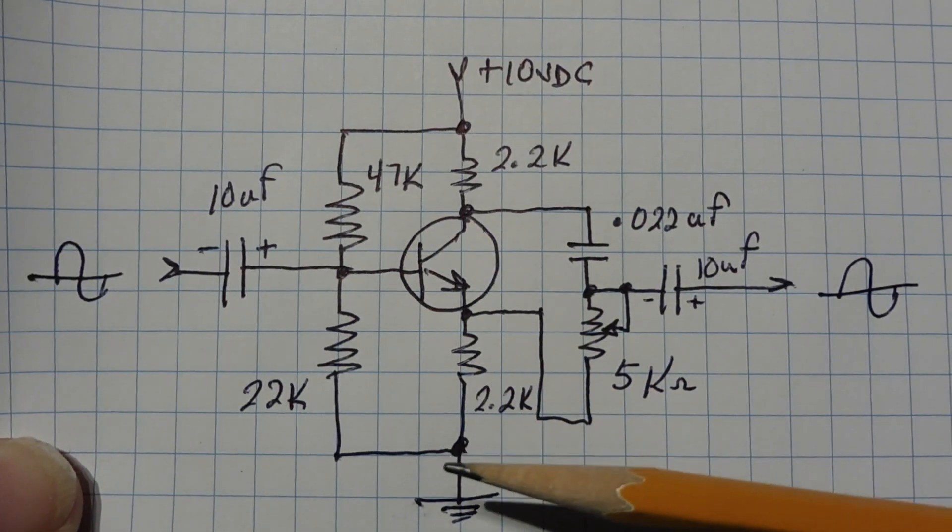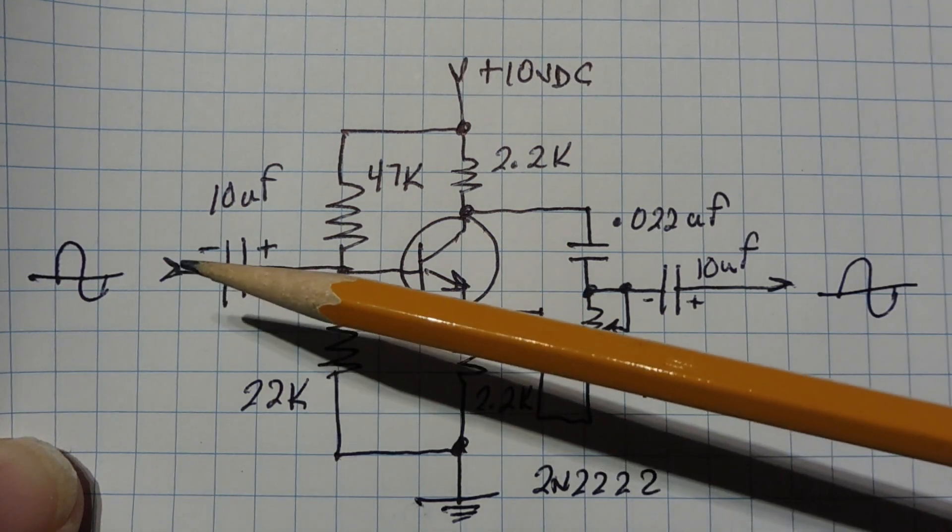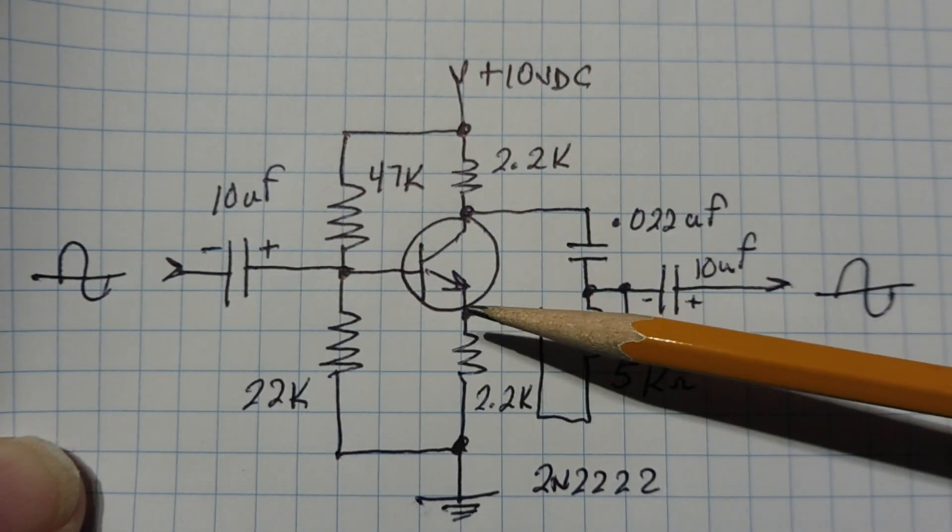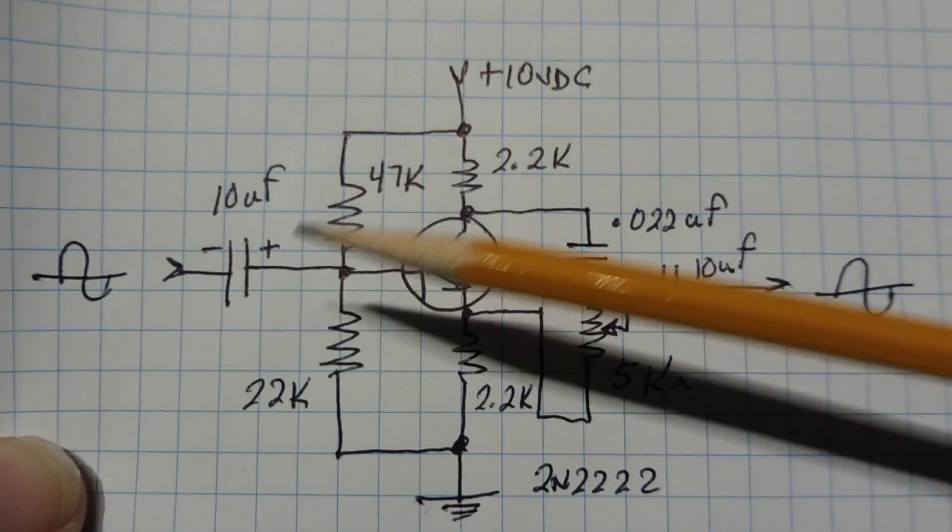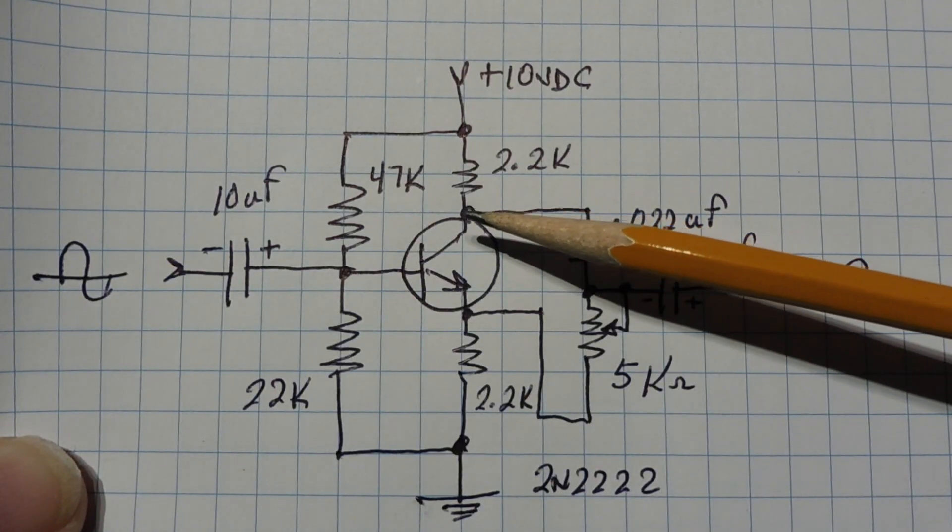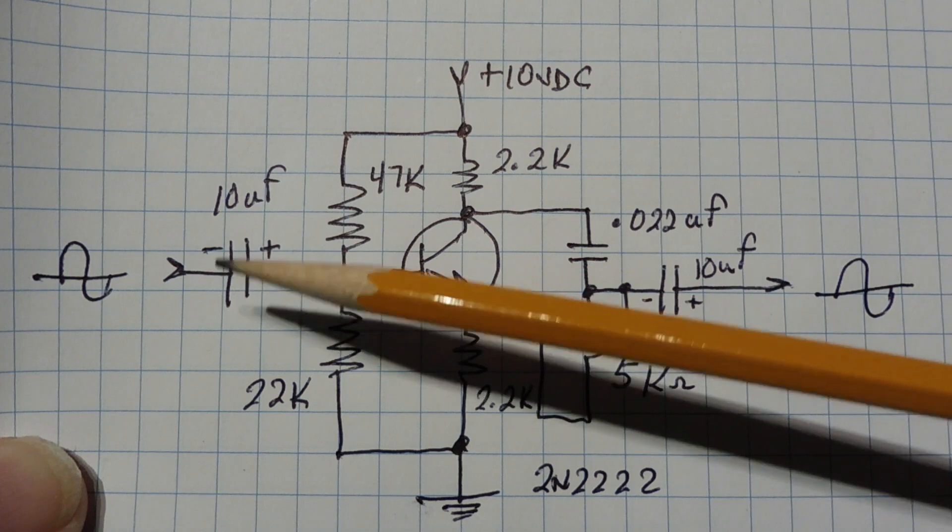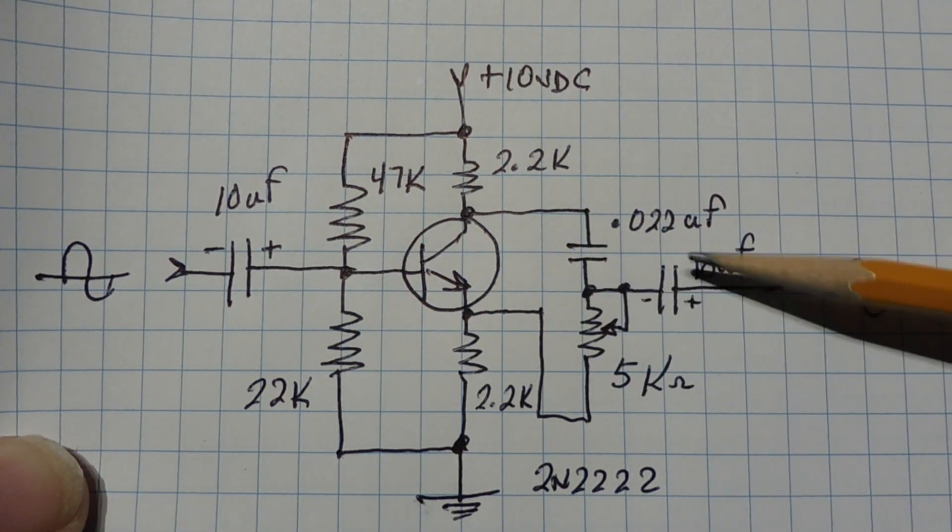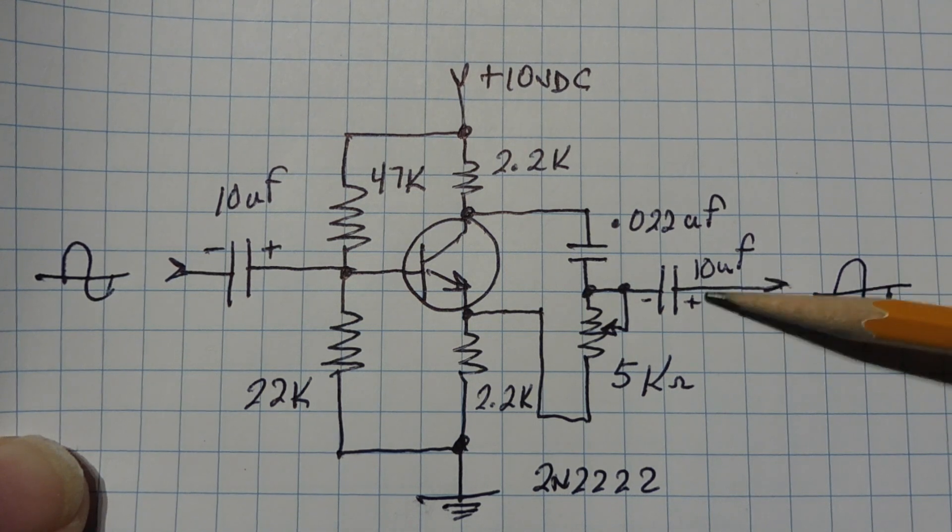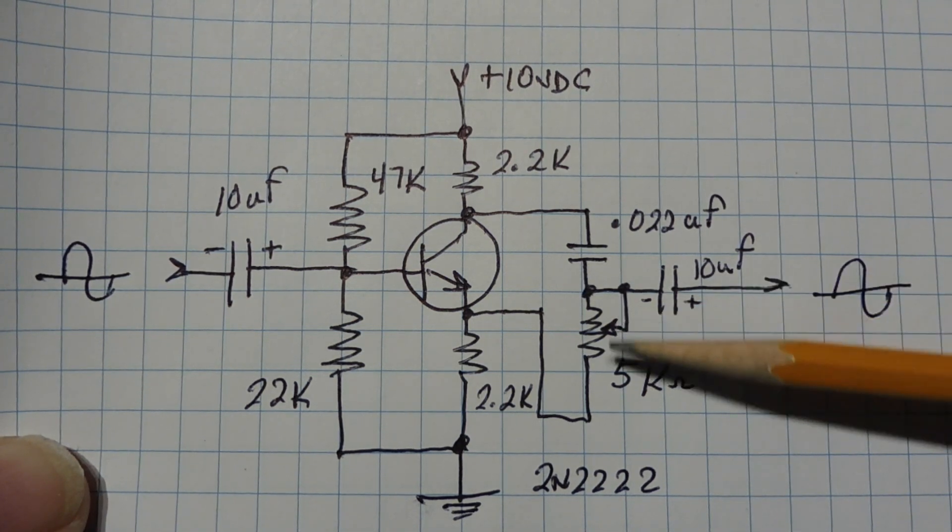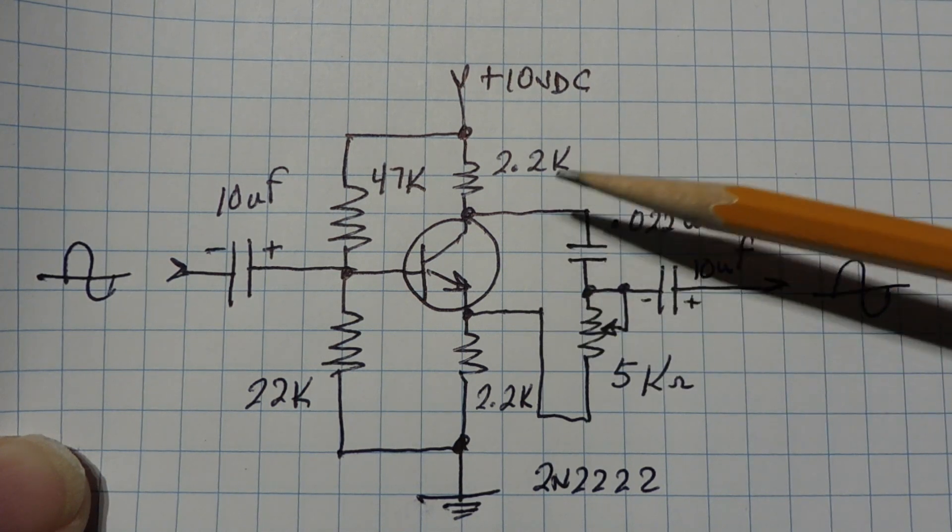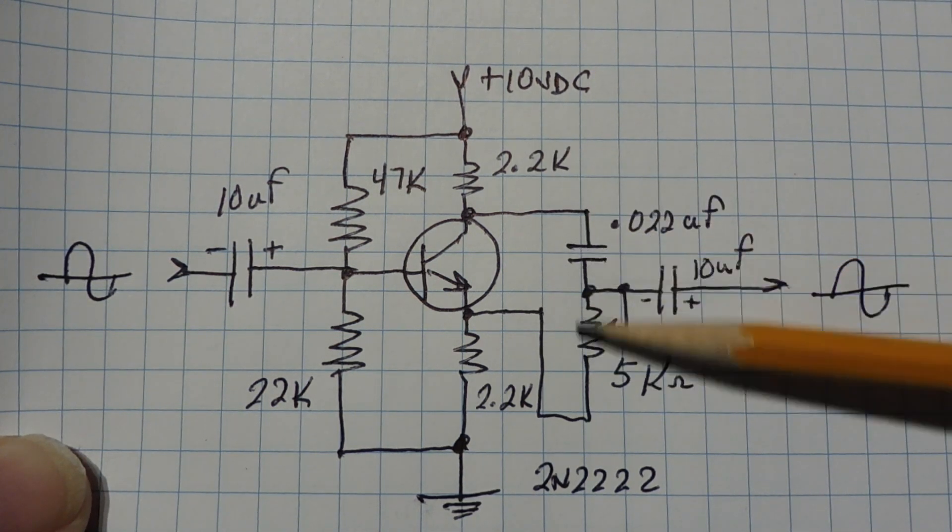We'll have a unity gain amplifier, so no amplification between the input and the output. The signal that we take off the emitter resistor will be in phase with input. And the signal we take off the collector will be 180 degrees out of phase from the input. So we combine them through this RC network. We'll get our output through this 10 microfarad capacitor. As we vary this resistor, we'll vary the output from zero degrees to 180 degrees through this RC network.